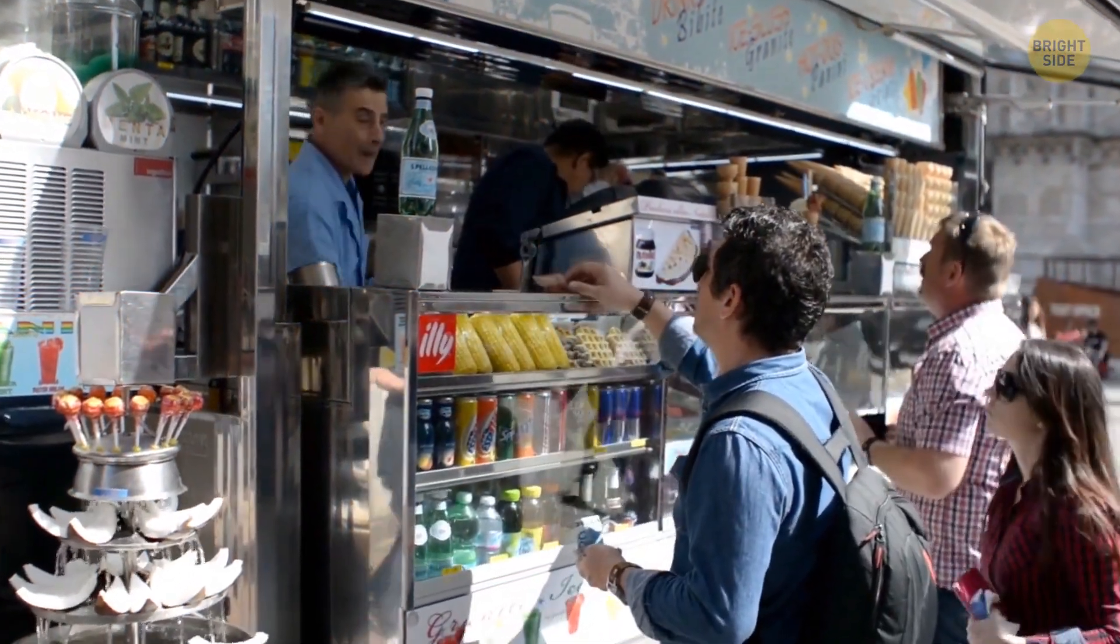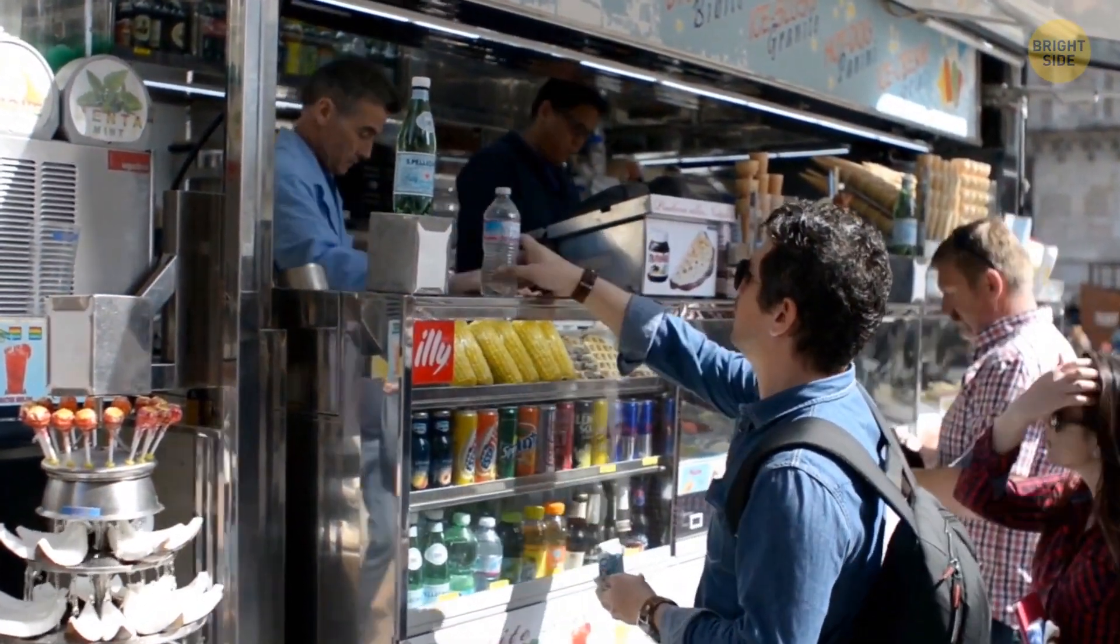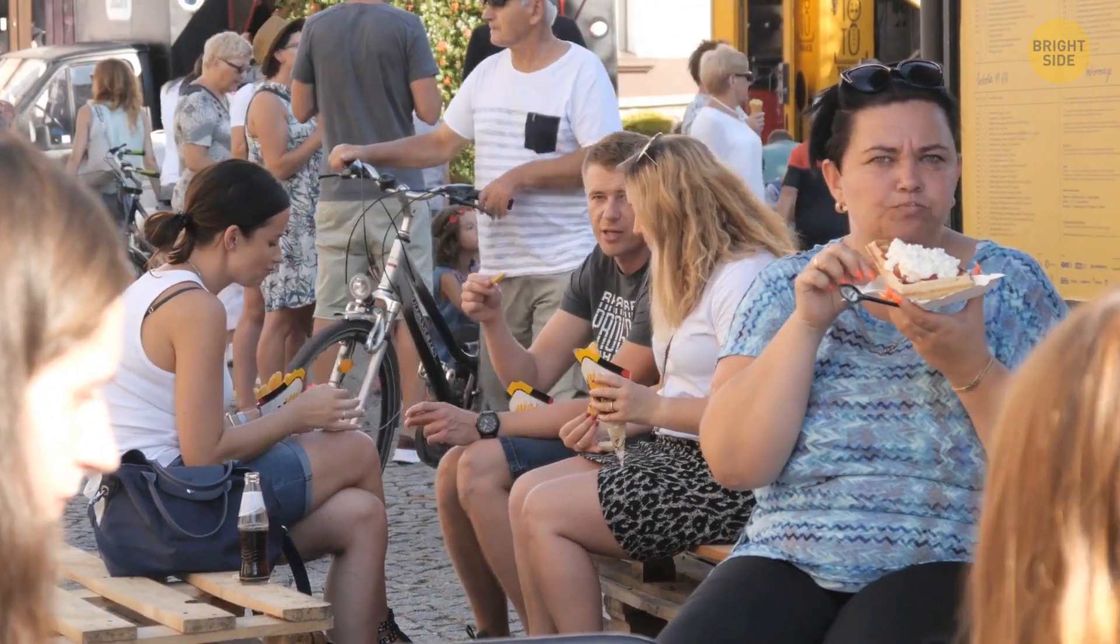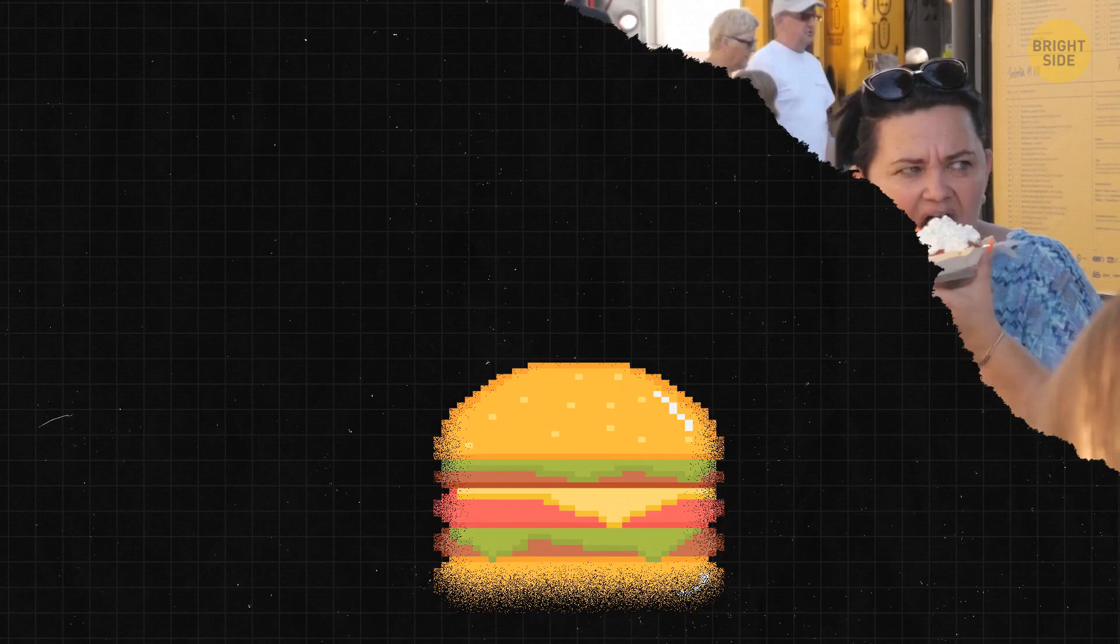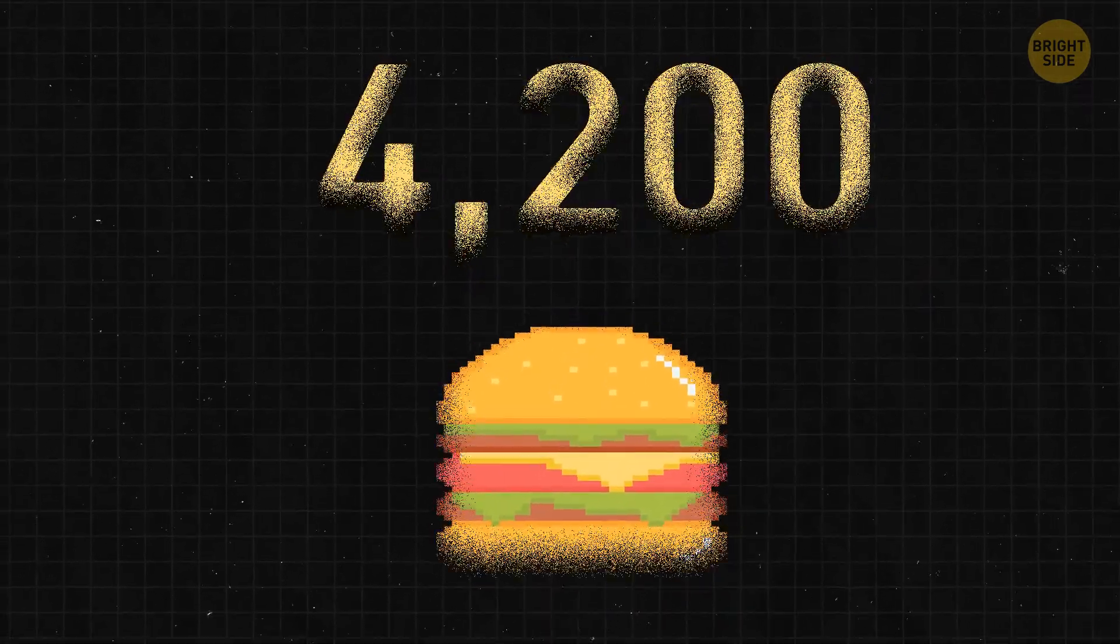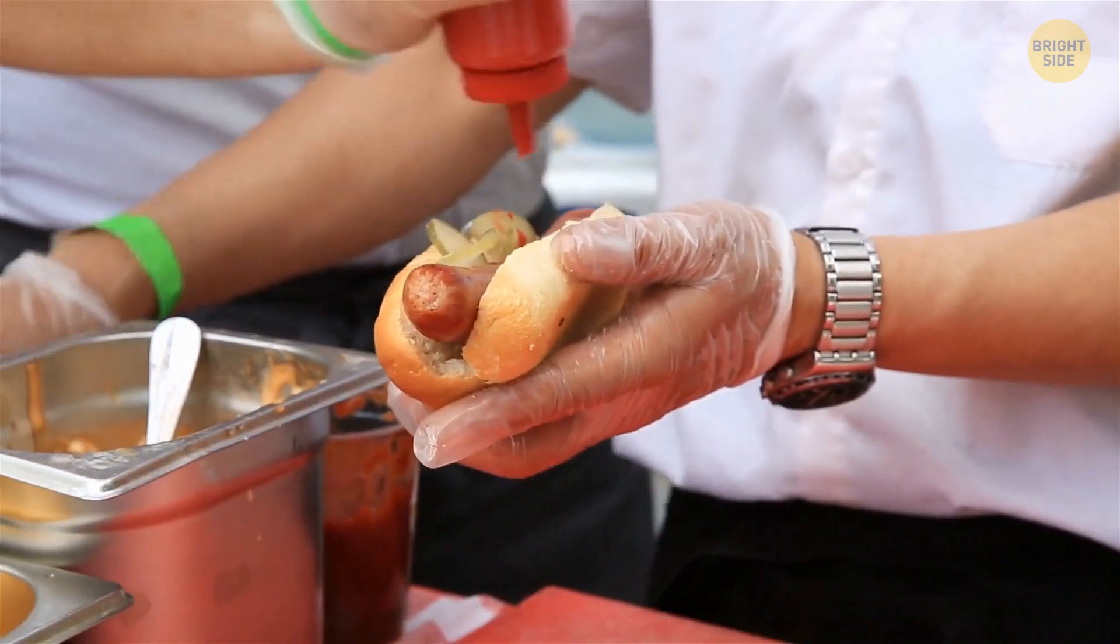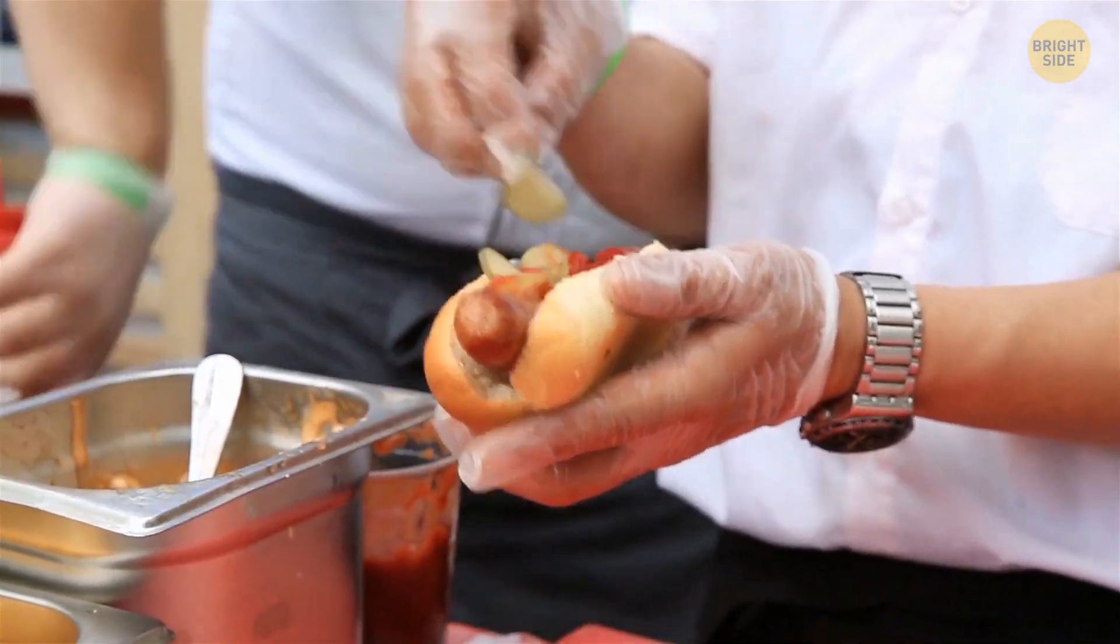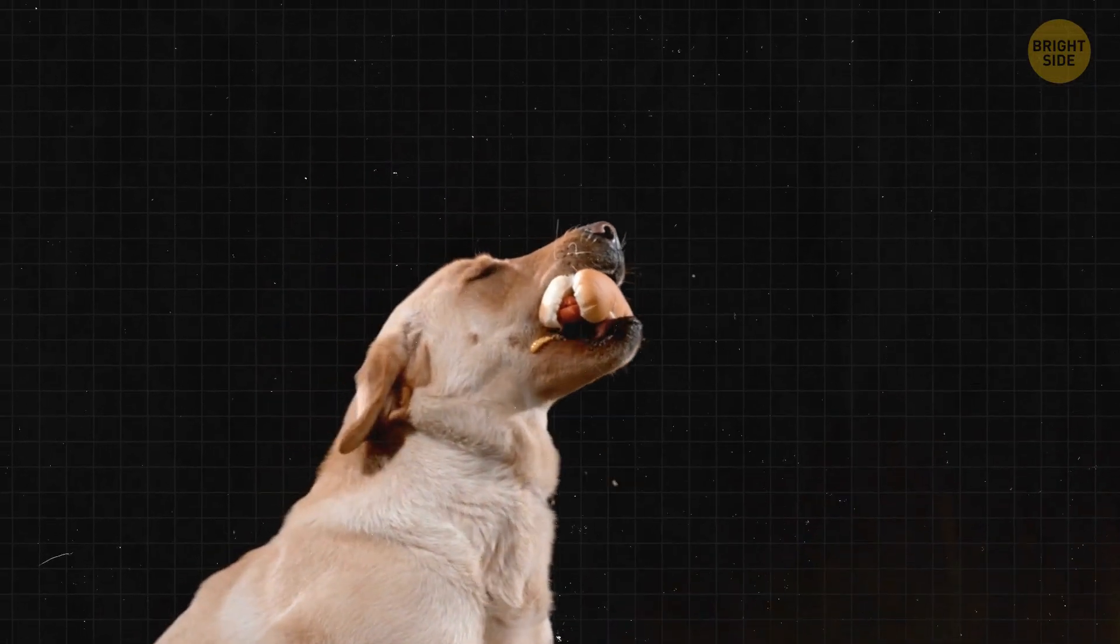Now, each time you munch on a snack, you're fueling up this power plant, which is your body. One single calorie from your food is around 4,200 energy units called joules. If you're eating 2,000 calories a day, you're transforming that into almost 6,000 joules every minute. And here's how everything happens.